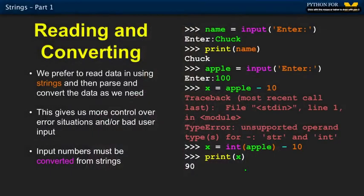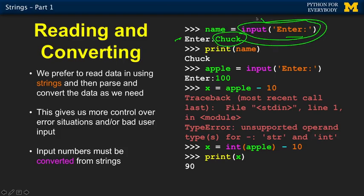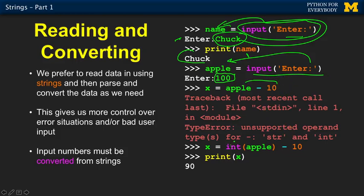Another thing we've been doing is reading data from input. The input function prints out a prompt. We type something, and then whatever that is comes back as the result of the function and gets stuck into 'name'. If we print that — print is also a function — we pass name in, we get out 'chuck'. Even if we enter some numbers like 100, that doesn't make it an integer. Input gives us back a string, so we can't subtract 10 from it — traceback. But if we convert it to an integer and then subtract 10, then 100 minus 10 becomes 90.